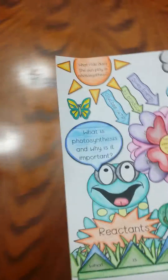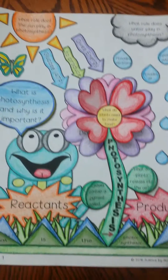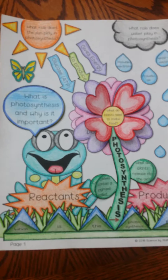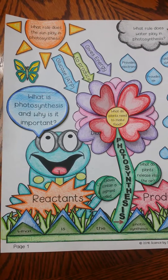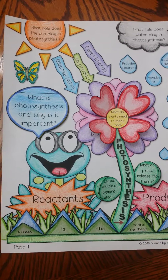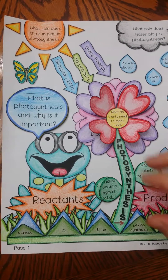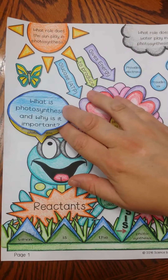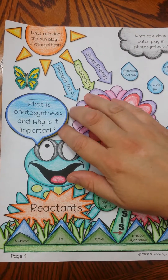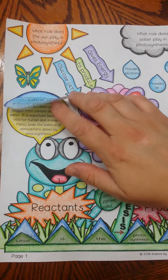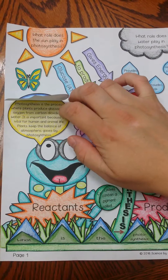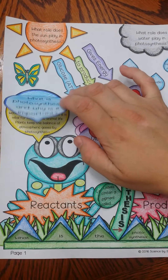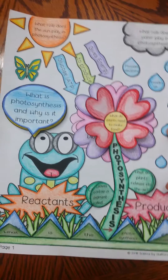With this foldable, you will see that there are many different parts that actually fold up or flip up. Here, it asks the question: what is photosynthesis and why is it important? Again, you can change this to fit your classroom needs.